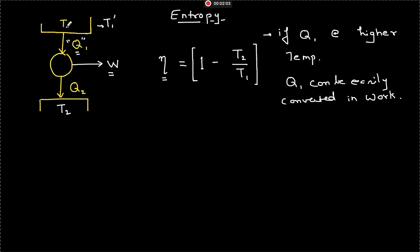And if the same Q1 is taken at a lower temperature, then your efficiency will also be lower. So the quality of heat which you are getting at higher temperature is more. This is what it tells us, and the entire concept of entropy can be thought of as an outcome of this only.